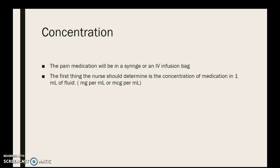It's important to know the concentration because if you're programming the pump, you're going to have to program that concentration into the pump. And when you're looking at the milligrams a patient receives, it helps you understand their intake. For example, if a patient got 30 milliliters with a one-to-one concentration, then you know they got 30 milligrams. So the first thing we do is look for our concentration.